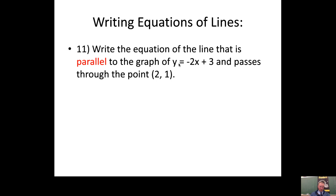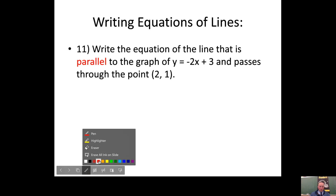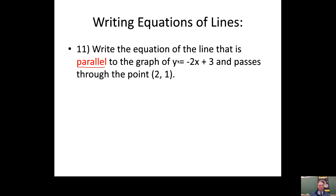We want to write the equation of a line that is parallel to y = -2x + 3 and also passes through the point (2, 1). Remember the parallel postulate — there are infinitely many lines parallel to this line, but only one of them is parallel and goes through this specific point. Parallel lines have the same slope. The y-intercept won't be the same because then it would be the exact same line.